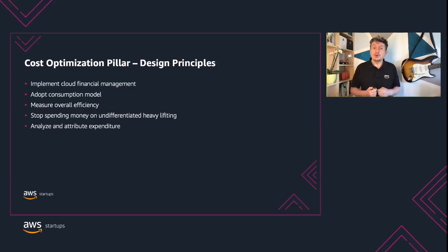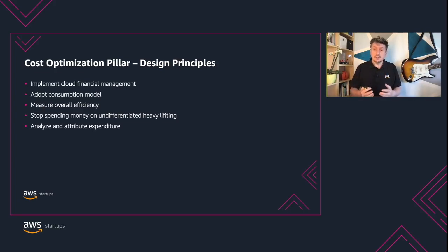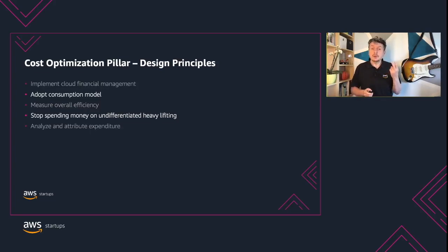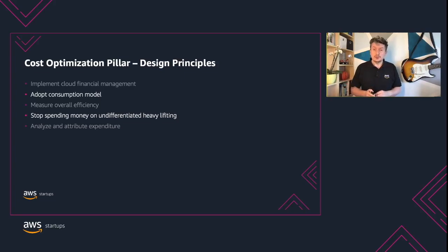The fourth principle is stop spending money on undifferentiated heavy lifting. Focus on your customers and business projects rather than on IT infrastructure. The fifth is analyze and attribute expenditure — accurately identify the cost and usage of each workload. Today we will take a look into two of these design principles, but I invite you to check out the others as well.